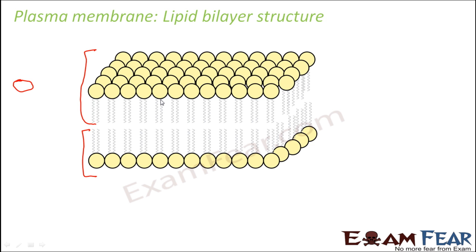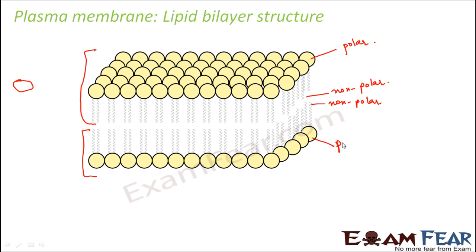Now as I was talking about amphipathic lipids which have one polar end and one non-polar end — the balls which you see here represent the polar end of the lipid, and the tail represents the non-polar end. The two layers of lipids are arranged such that the non-polar ends of both lipids face each other. Non-polar is nothing but hydrophobic, so the central portion is hydrophobic in nature because both hydrophobic ends of the lipids meet there.